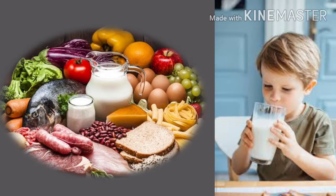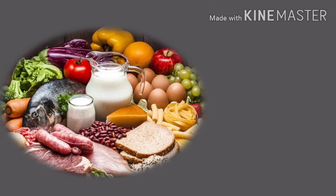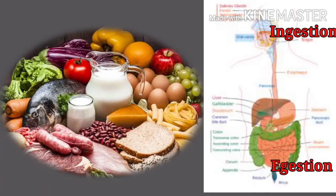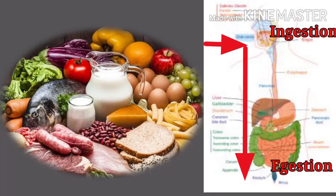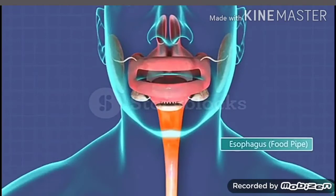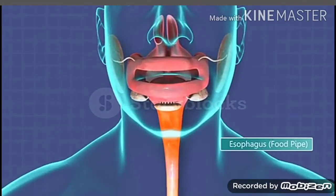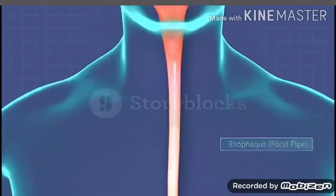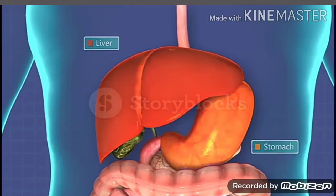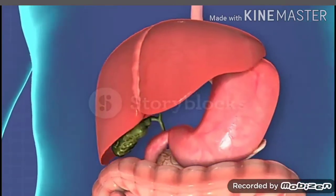Food needs to convert into soluble forms that can easily mix in blood. Nutrition in animals involves various steps from ingestion to egestion. Ingestion means taking food in, and egestion means removing the undigested part of food, which is waste, through the body.